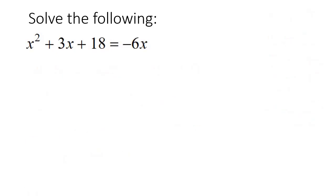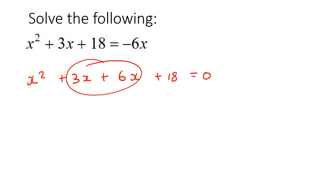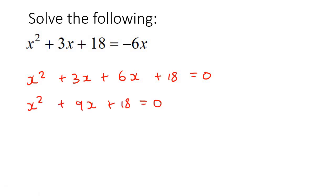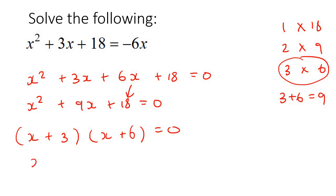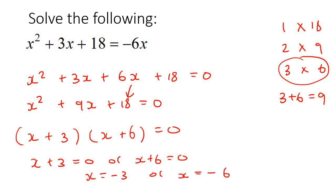Let's do one more example — well done for sticking with it. We have an x squared term, so take everything to one side. Combining the x terms gives x squared plus 9x plus 18 equals 0. It's a trinomial, so look at 18: 1×18, 2×9, 3×6. To make 9, we use 3 plus 6. So (x plus 3)(x plus 6) equals 0, giving x plus 3 equals 0 or x plus 6 equals 0, and therefore x equals negative 3 or x equals negative 6.